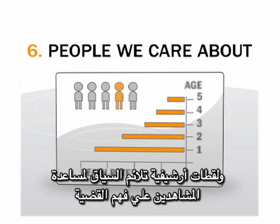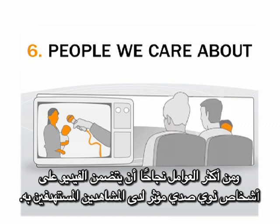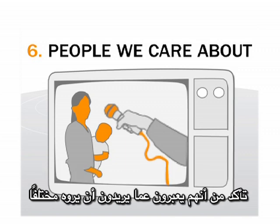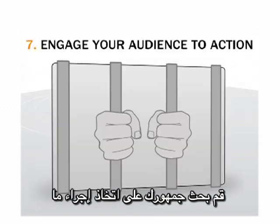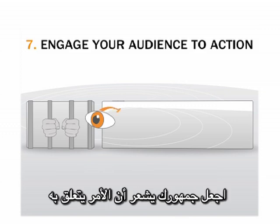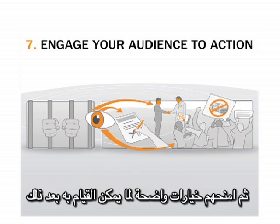People we care about — many advocacy videos include powerful, accurate facts and context, and setting footage to help viewers understand the issue. The most successful also have people in them who resonate with their audience. Let the individuals affected by an issue talk about it rather than explaining it on their behalf. Make sure they express what they want to see different. Engage your audience to action: make your audience feel included, engaged, shamed, motivated, hopeful, or outraged — then give them clear options for what they can do next.